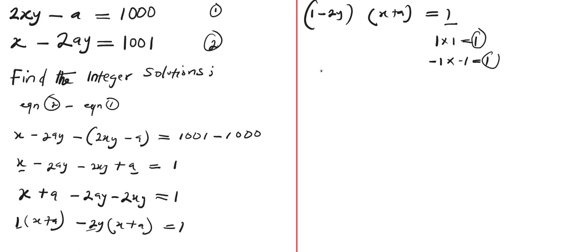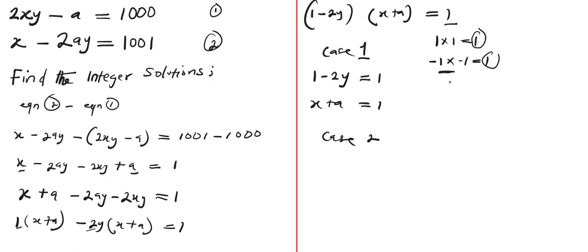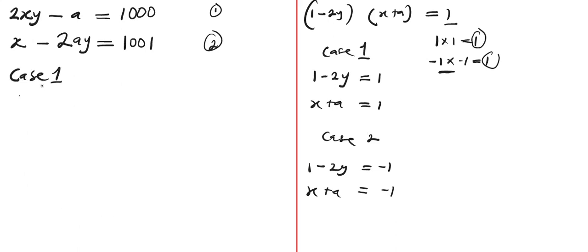We will equate each factor pair to the two factors in our expression. Case 1: 1 minus 2y equals 1 and x plus a equals 1. Case 2: 1 minus 2y equals negative 1 and x plus a equals negative 1. Let's start with Case 1.